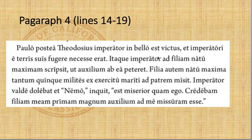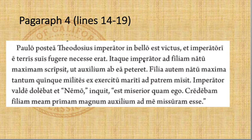'Itaque imperator ad filiam natu maximam scripsit.' And so the emperor wrote to his oldest daughter — natu maximam meaning oldest — 'ut auxilium ab ea peteret,' a purpose clause: in order that he might seek help from her. So the emperor wrote to his oldest daughter to seek help from her.